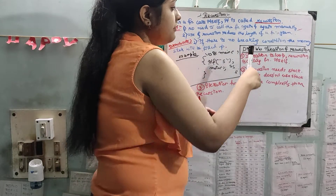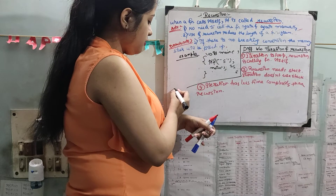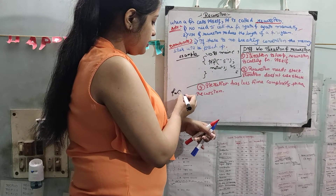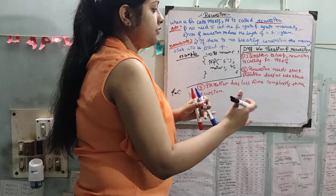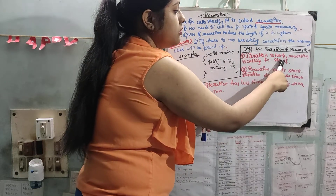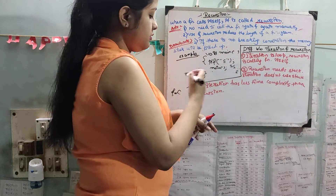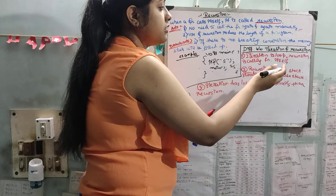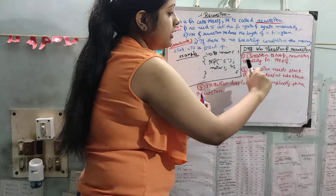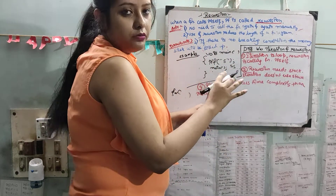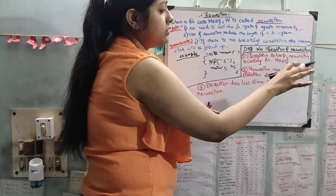Next is the difference between iteration and recursion. Iteration is a loop — we have done programs using for loops. Recursion is a function calling itself. Number two, recursion needs a stack — we will see that recursion uses the stack.